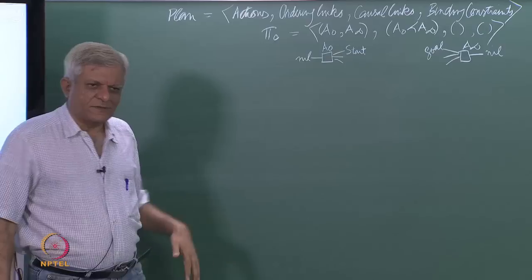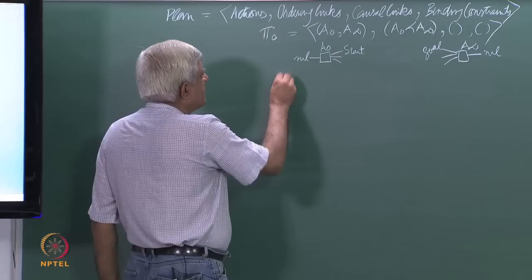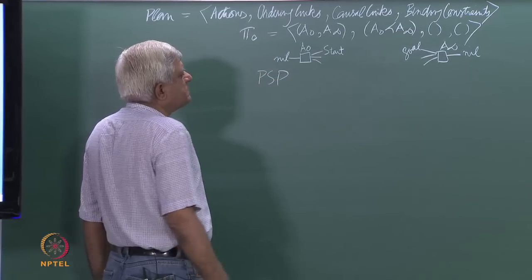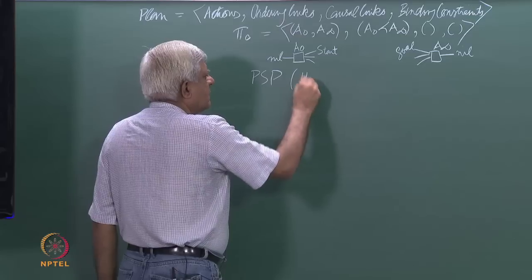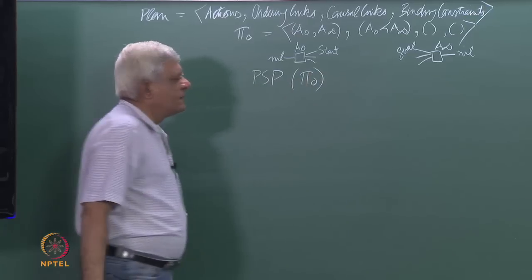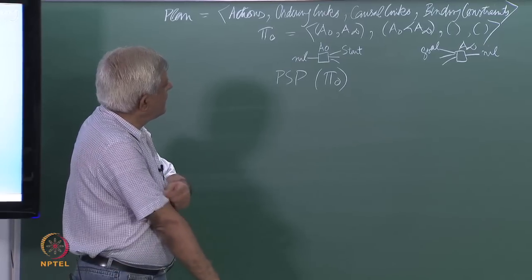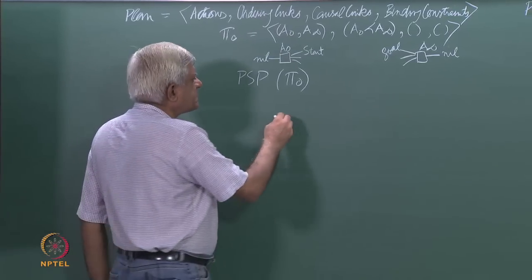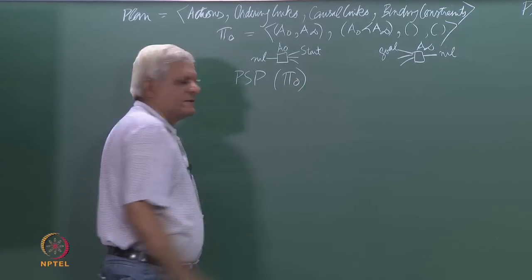Let us first write down the algorithm and then discuss its constituents. The high-level algorithm for plan space planning begins with π₀, which is the initial plan. We initialize π to π₀ and use π to stand for plans in general.